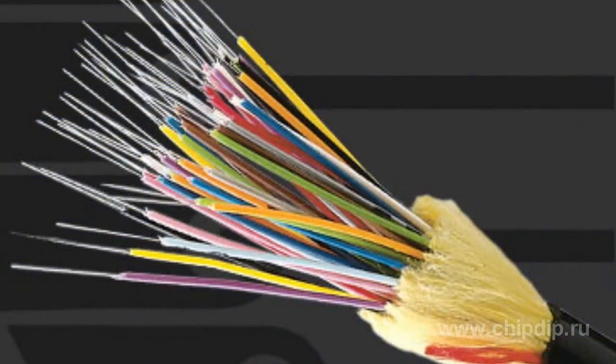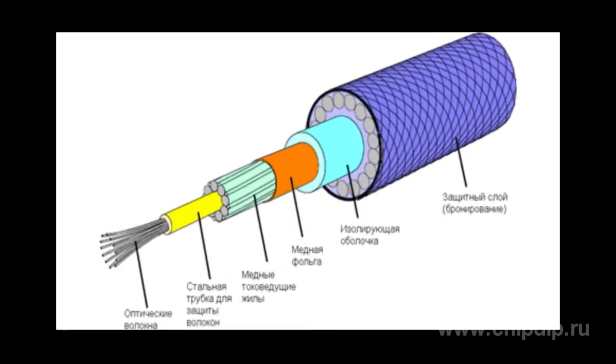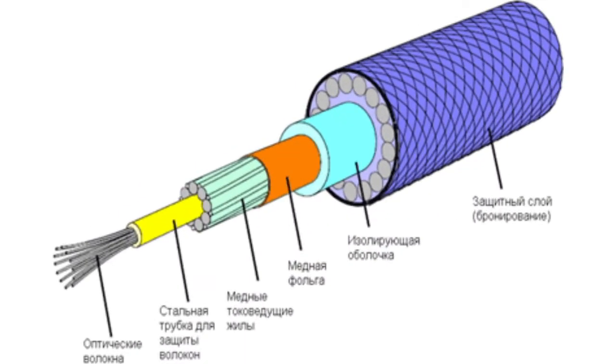Structurally, the fiber optic is a set of light-guiding fibers, with each of them laid in a soft protective material buffer, and they in turn are protected by a hard coating.